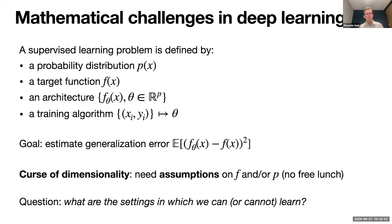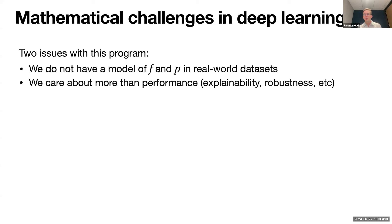The main problem here is the curse of dimensionality when x is high-dimensional. We need assumptions on f and/or p — both the target function and the input data — to say something non-trivial about the generalization error. This is also known as the no free lunch theorem. The natural question is: what are the settings in which we can or cannot learn?